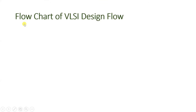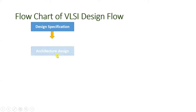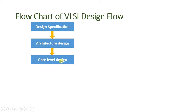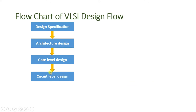Now let us see the flowchart of VLSI design flow. It starts with design specifications. After that, we design with respect to its structure, so architecture design is done where we define the planning of that VLSI design. After that, we design in more detail where gate level designing is done — there will be digital circuit functioning at gate level design. And if you zoom inside of that gate level design, there will be circuit level design.